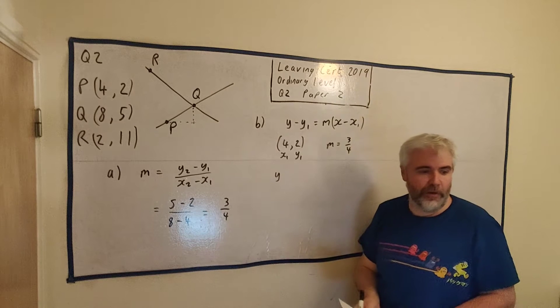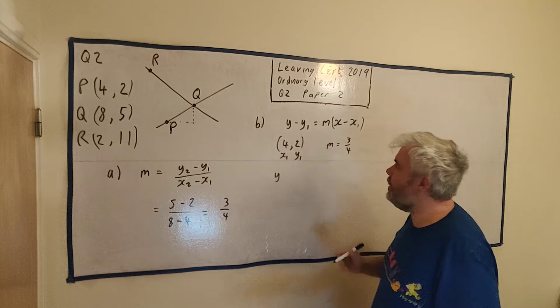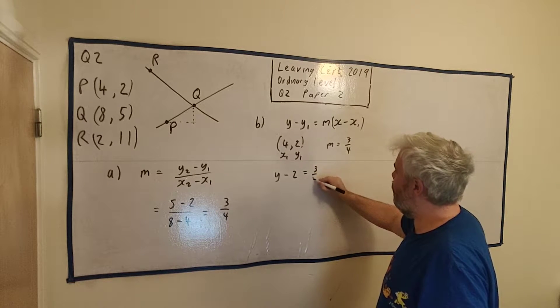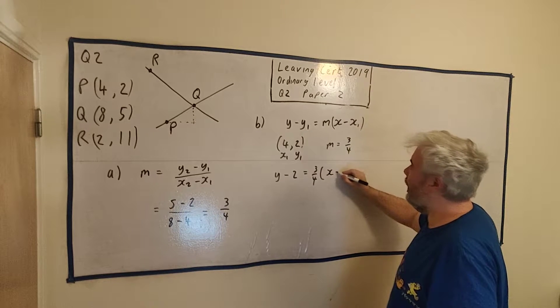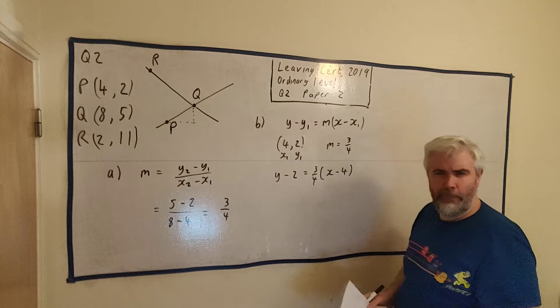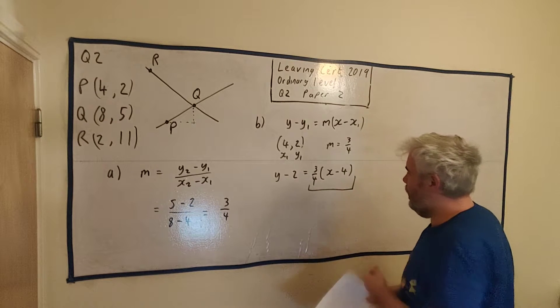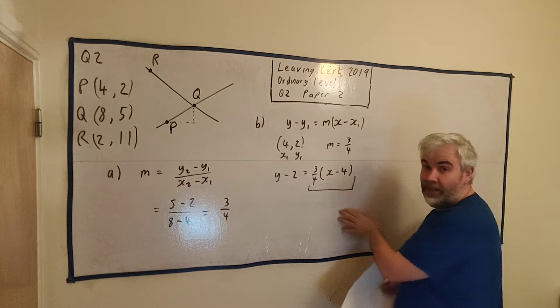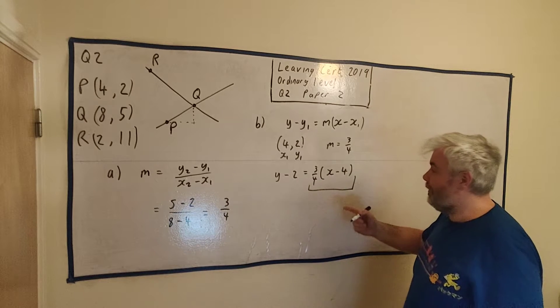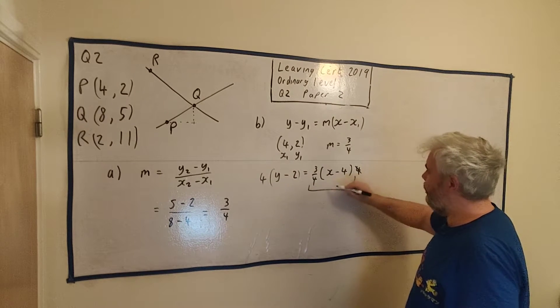We just need to fill this in. Y minus Y1 is 2 equals M is 3 over 4. X minus X1 is 4. Now we have a 4 in the denominator. That's awkward to deal with, so let's multiply both sides by 4. This 4 and this 4 cancel.